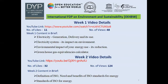Here are the details of Video 1 and Video 2 presentations. For Video 1, you can go through the YouTube link provided. In Week 1, I discussed how electricity is generated and delivered to consumers and how it is utilisable, what the electricity system is and its impacts on the environment, how we can reduce these environmental impacts, and how to calculate greenhouse gas equivalencies. In Week 2, we discussed the definition of ISO, the need and benefits of ISO standards for energy, and the various ISO standards available for energy.